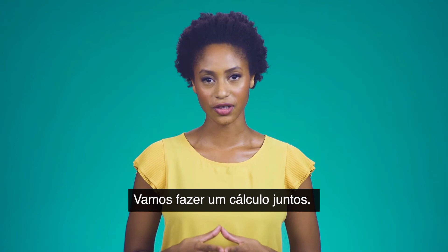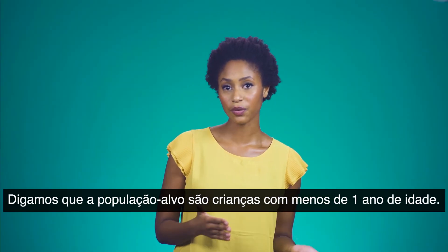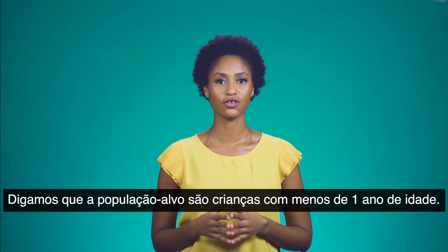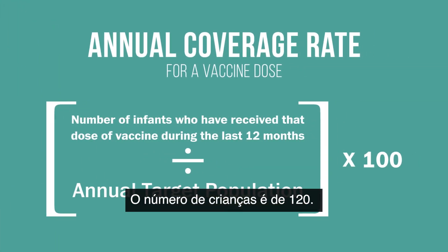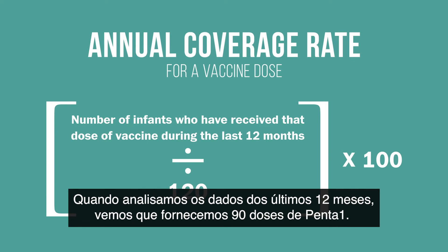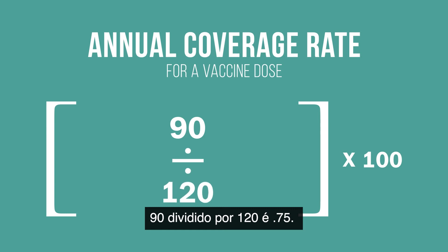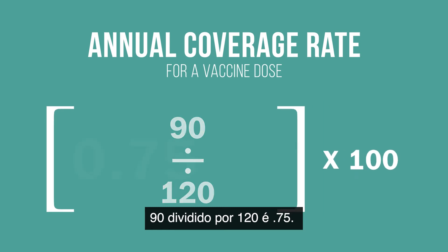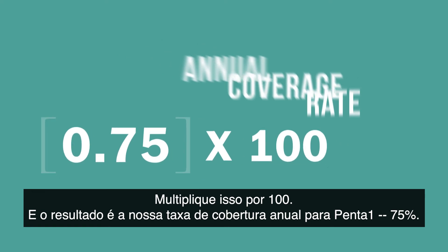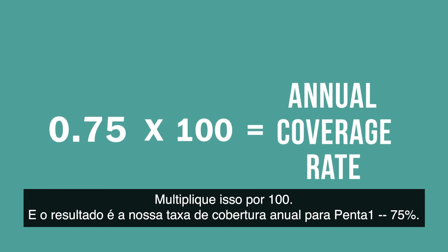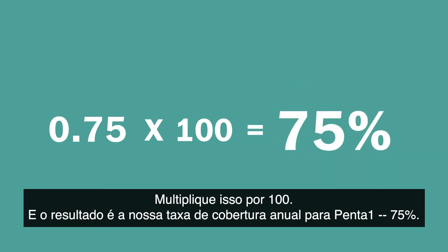Let us do a calculation together. Let us say the target population is infants under the age of one, and the number of infants is 120. When we look at data for the past 12 months, we see that we delivered 90 doses of pentavalent 1. 90 divided by 120 is 0.75. Multiply that by 100 and the result is our annual coverage rate for pentavalent 1, which is 75%.